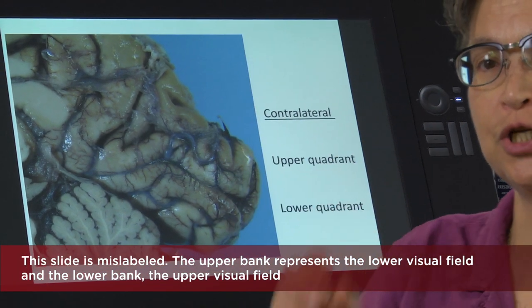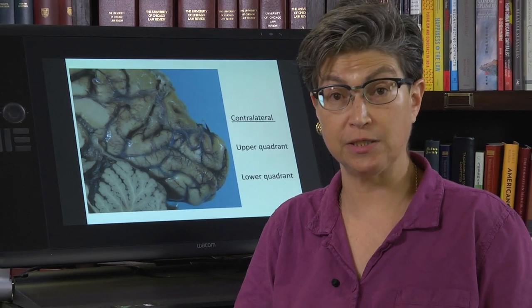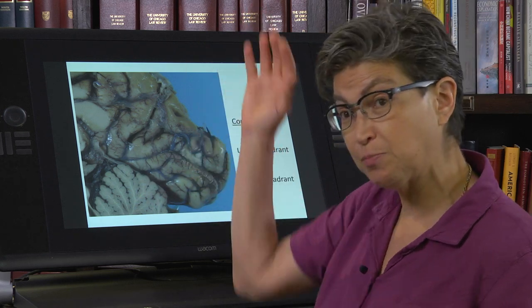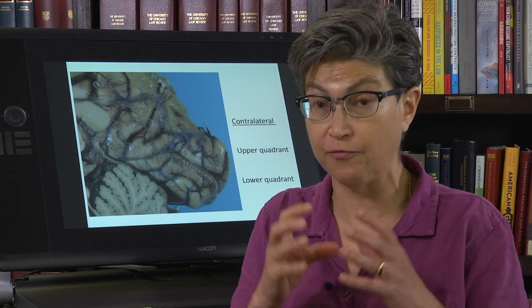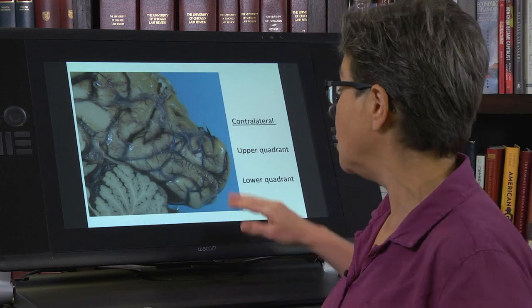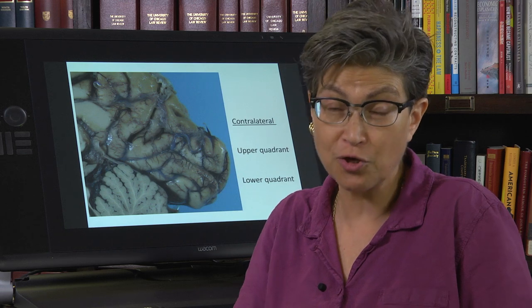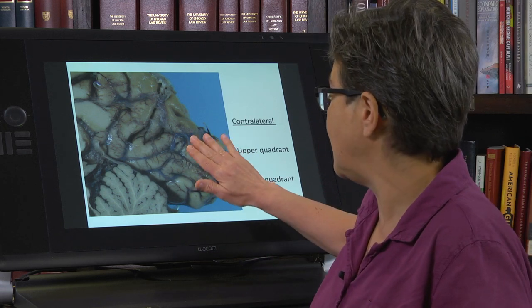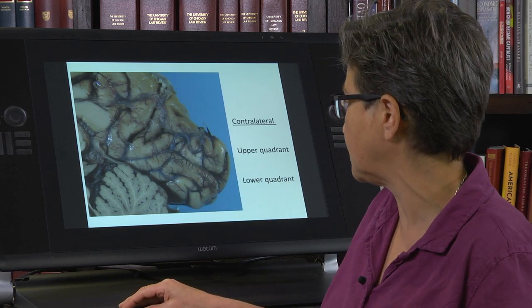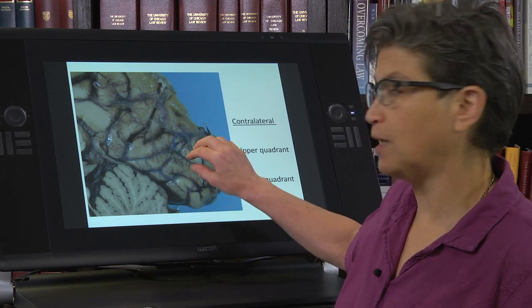Just as in the somatosensory cortex much more space is given to the fingertips and lips, in the visual cortex just as much space is given to the central five degrees of visual field as to the entirety of the rest of the visual field. We get most of our information from the center — the macula — so that takes up much more space in the primary visual cortex.